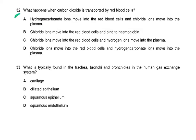Question 32. What happens when carbon dioxide is transported by red blood cells? Hydrogen carbonate ions move into the red blood cells and chloride ions move into the plasma — wrong. Chloride ions move into the red blood cells and bind to hemoglobin — wrong, chloride ions do move in but don't bind to anything. HCO3⁻ ions move into the plasma. So the answer is D: chloride ions move into the red blood cells and hydrogen carbonate ions move into the plasma.